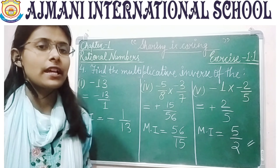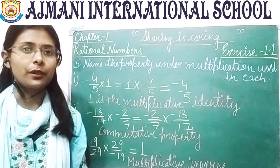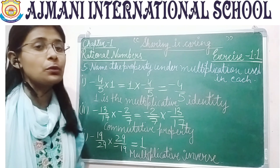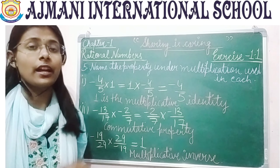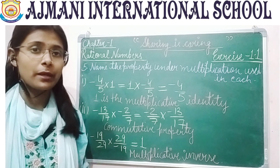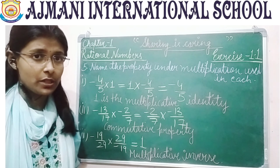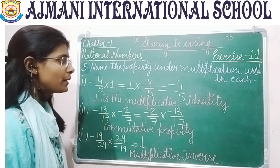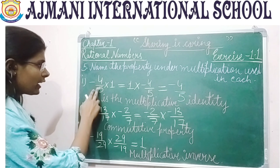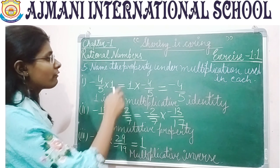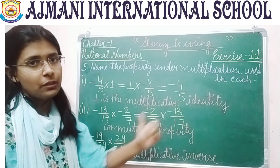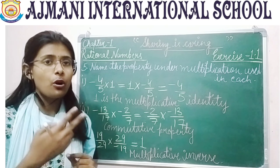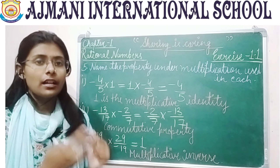Now question number 5: name the property under multiplication used in each. You need to check whether the property is commutative, multiplicative identity, or associative. The first part is minus 4 by 5 multiplied by 1 equals 1 multiplied by minus 4 by 5 equals minus 4 by 5. Since any rational number multiplied by 1 remains the same, this property is called multiplicative identity.